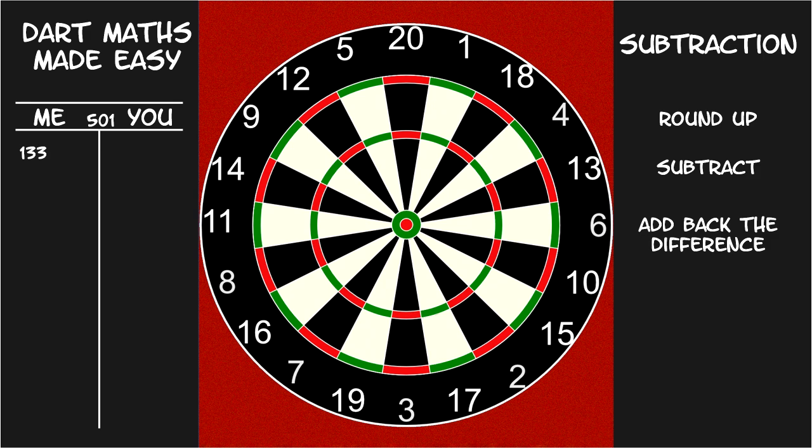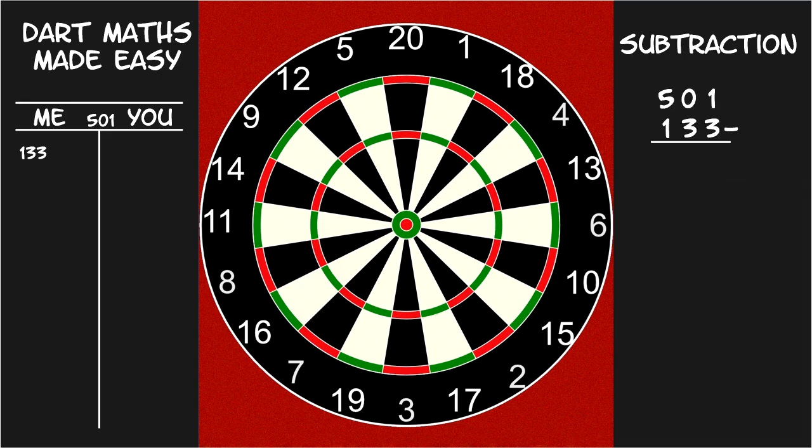In our previous example, the first player threw 133. The scorekeeper must now subtract that score from 501. Start by rounding 133 up to 140. The subtraction now becomes much easier to do in your head.